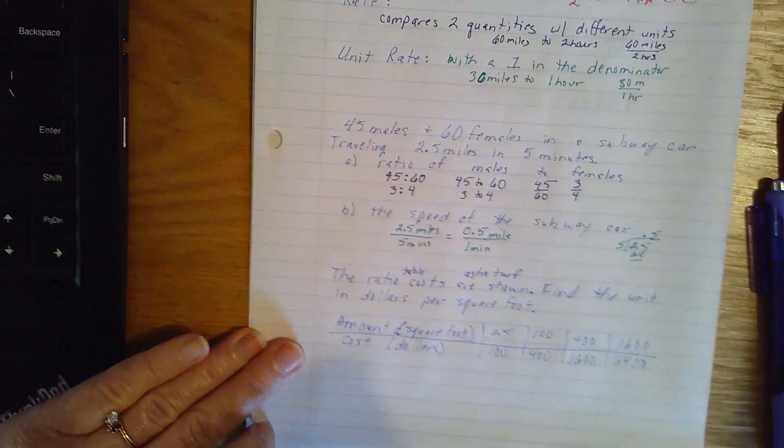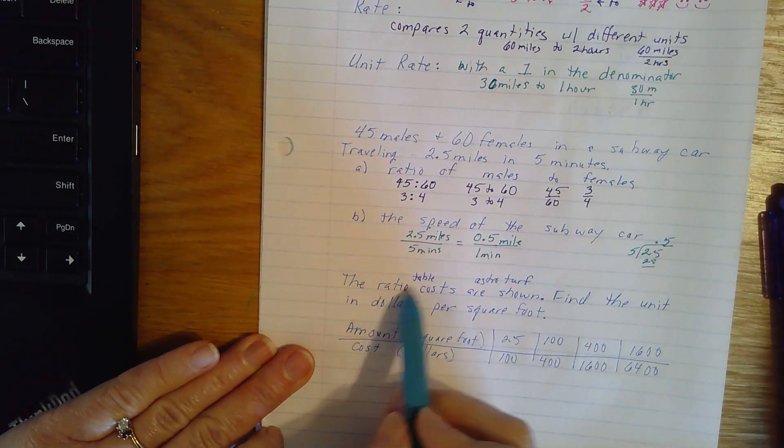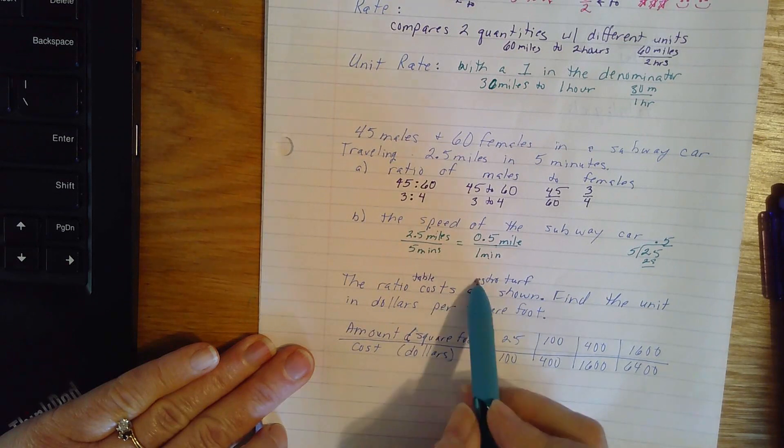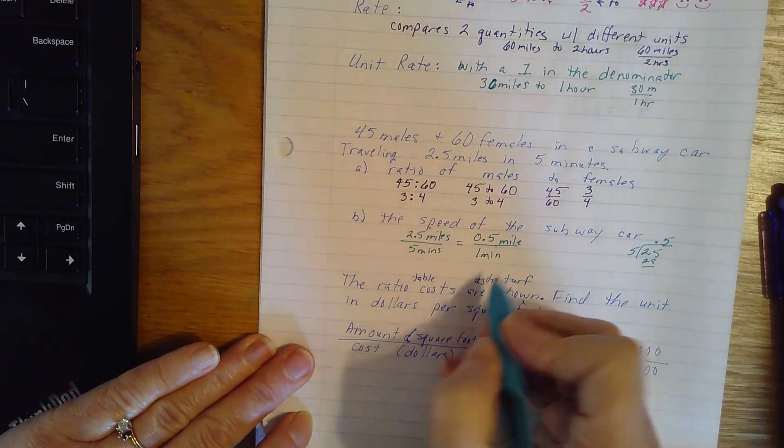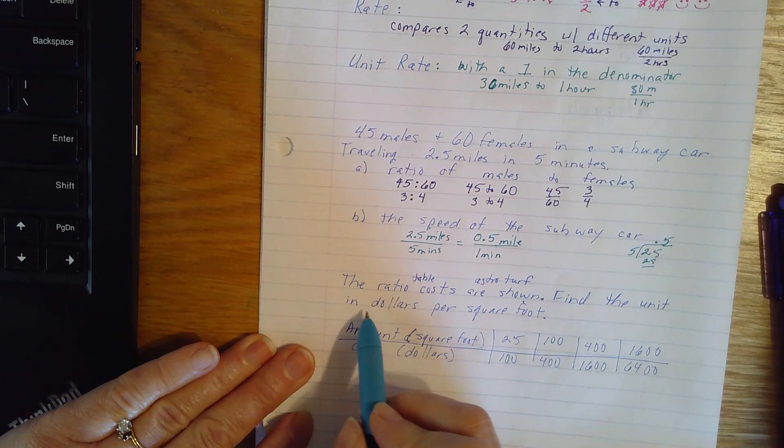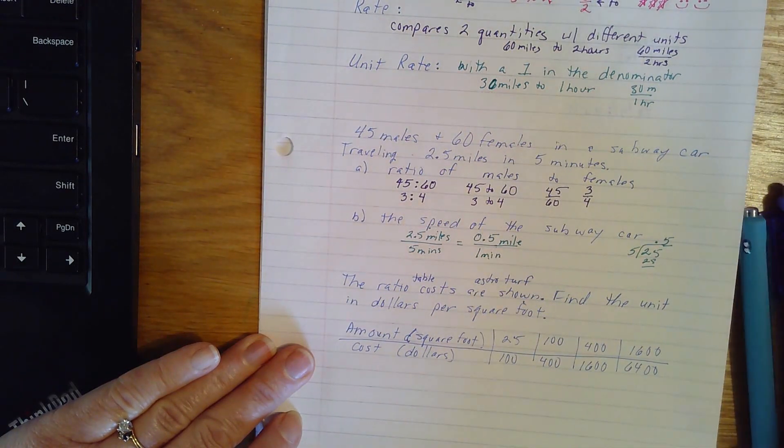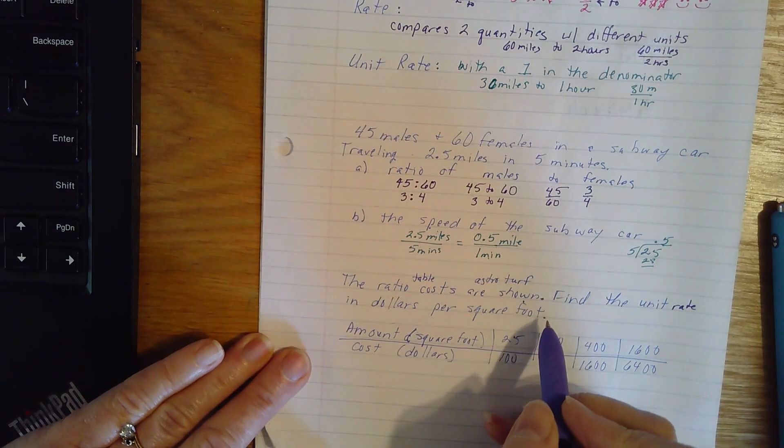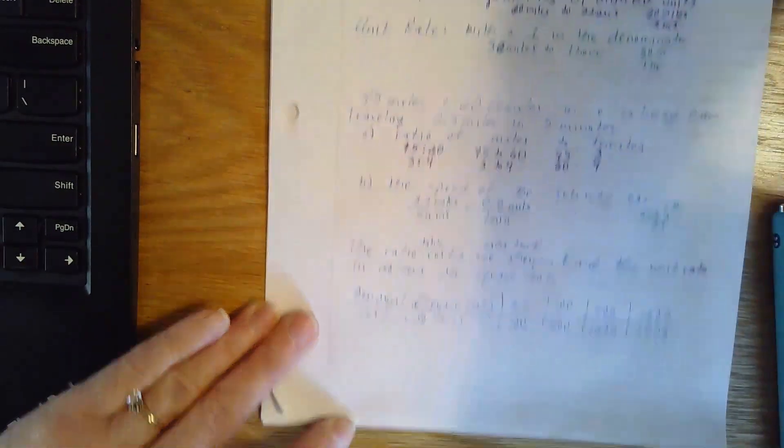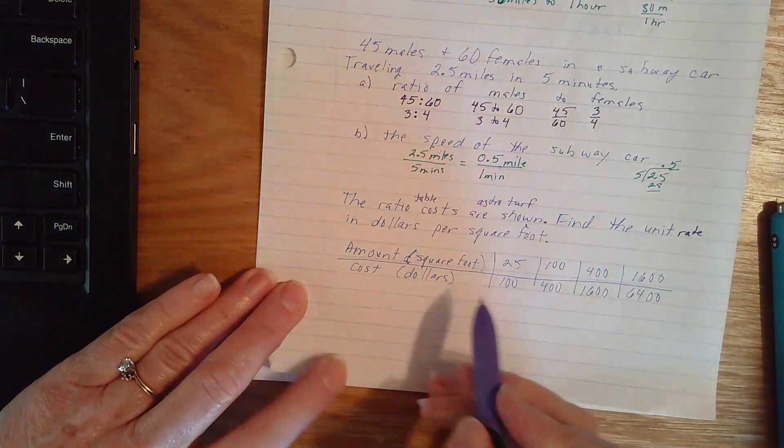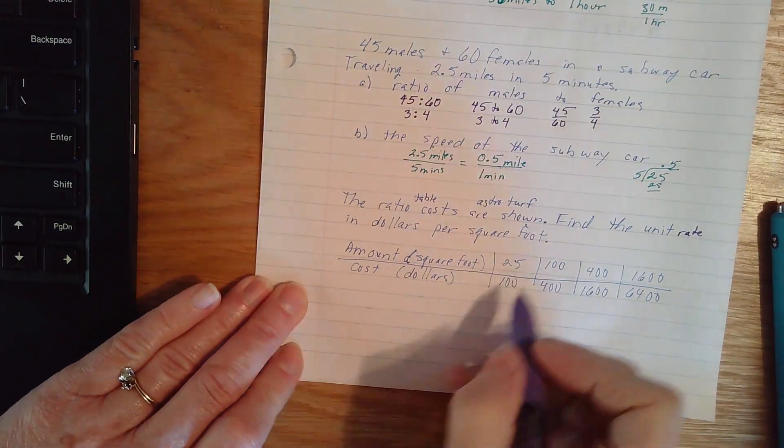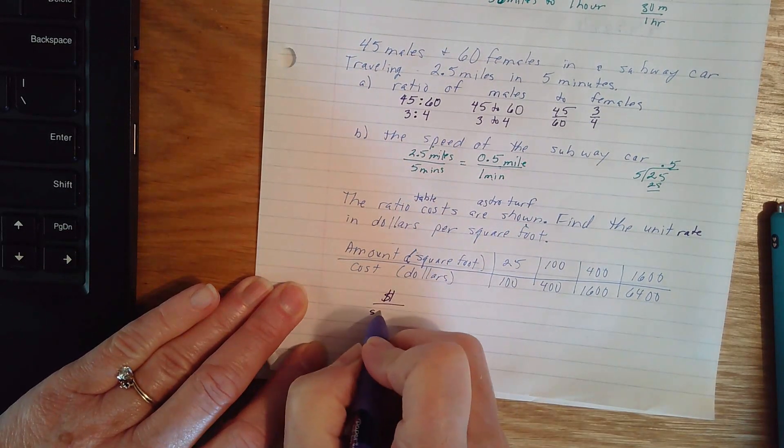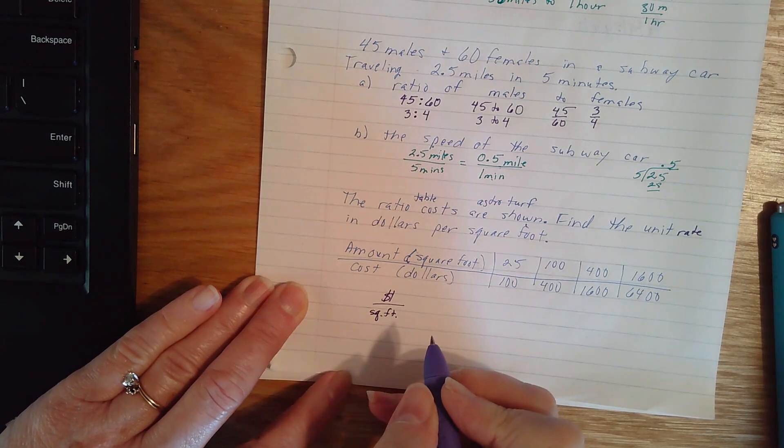So we're going to quickly look at the ratio. We're going to make a ratio table of the cost of AstroTurf are shown. Find the unit rate in dollars per square foot. So as I look at this, I see that I want dollars per square foot. And the first thing I'm going to do is label my work.